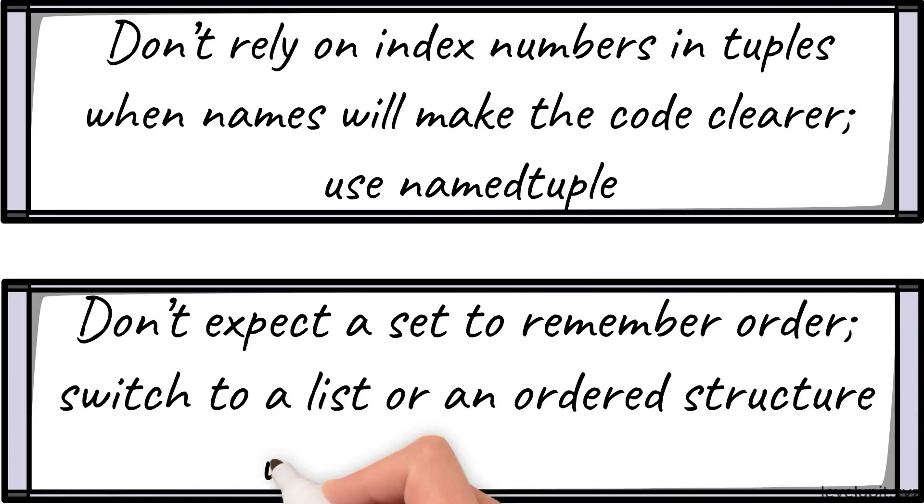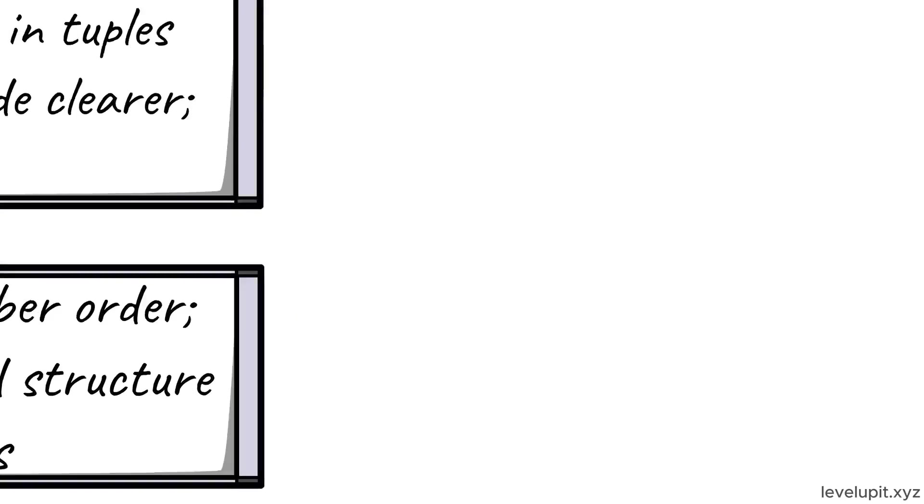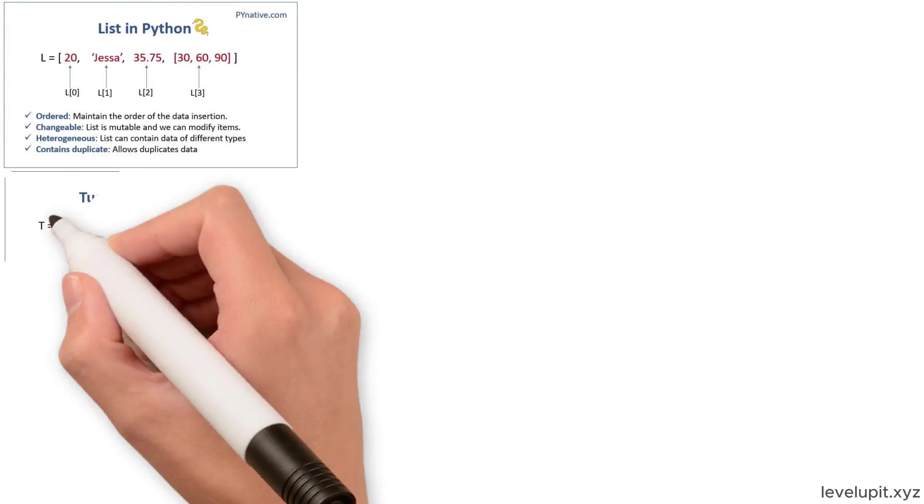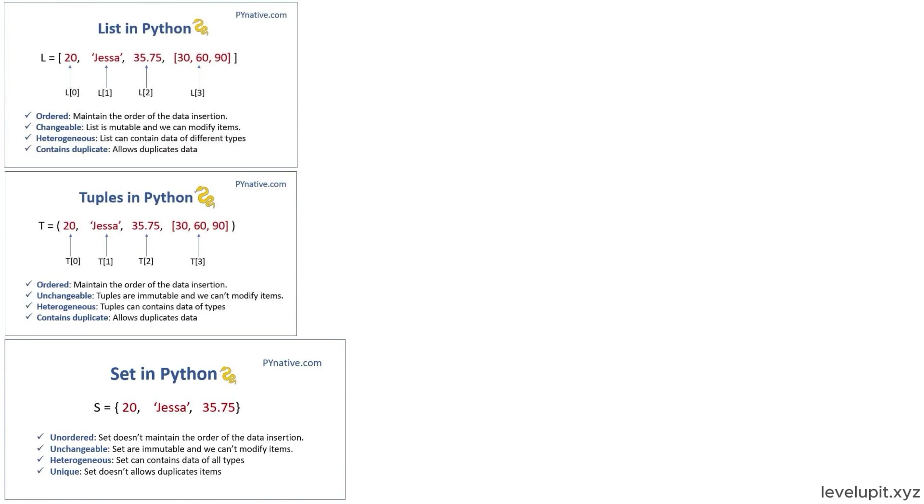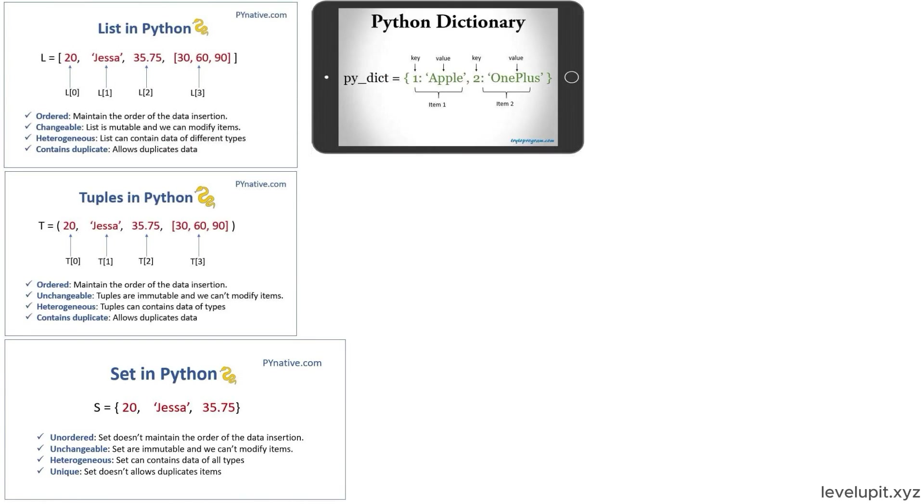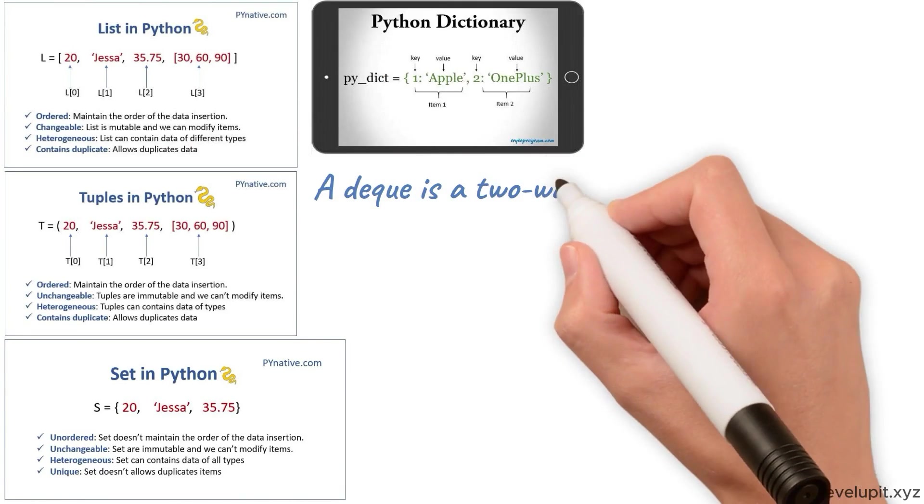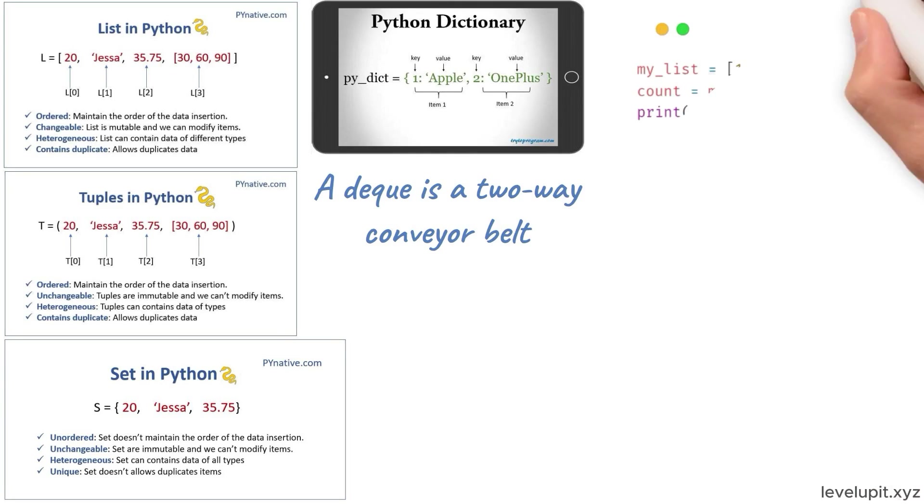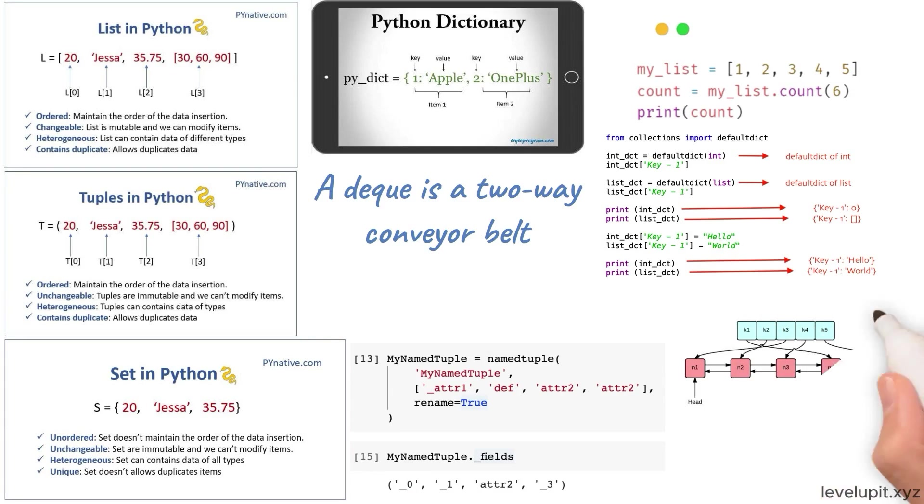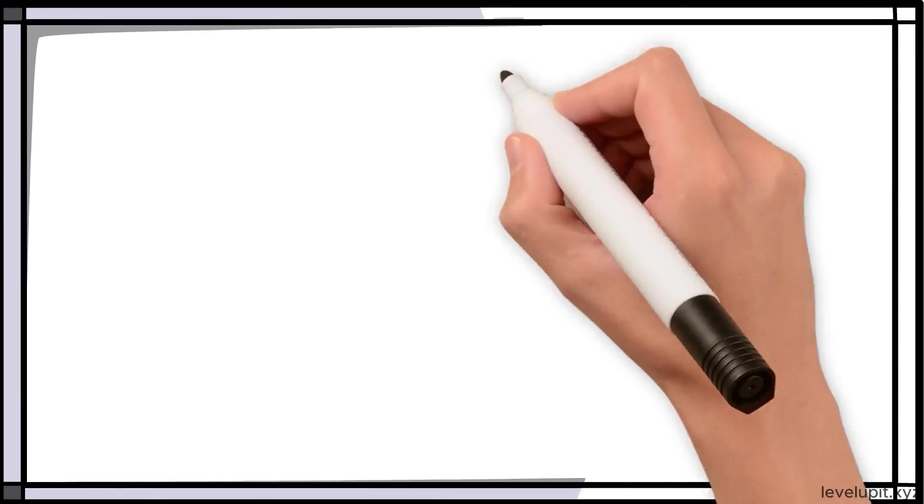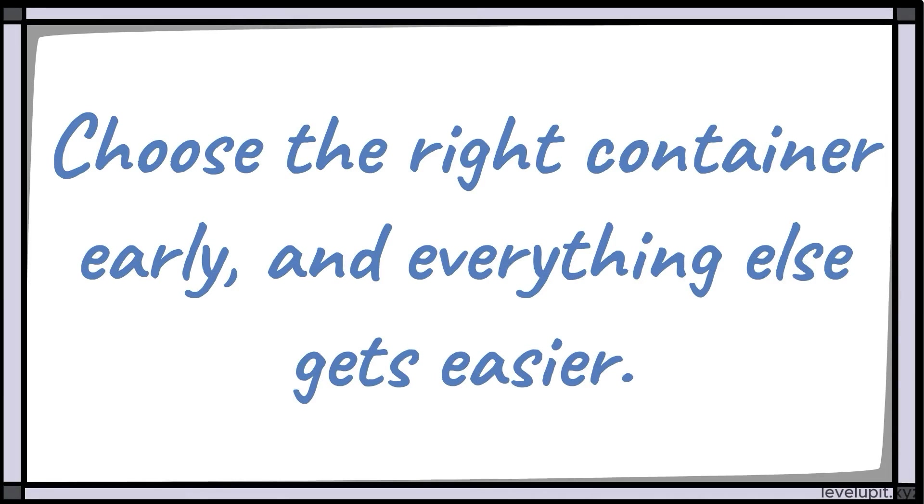Switch to a list or an ordered structure when order matters. The pictures are easy to remember. A list is a neat line that can grow and change. A tuple is a fixed photo that you can trust. A set is a filter that keeps one of each and answers 'Do we have this?' fast. A dictionary is a labeled drawer system. A deque is a two-way conveyor belt. A Counter is a scoreboard. A defaultdict is a cabinet that creates the right drawer the first time it's used. A namedtuple is a labeled photo. An OrderedDict is a timeline you can rearrange on purpose. A ChainMap is a stack of transparent sheets where the top mark wins.